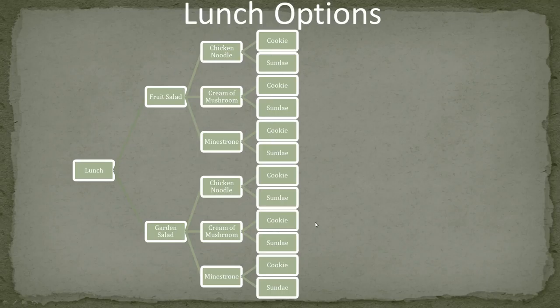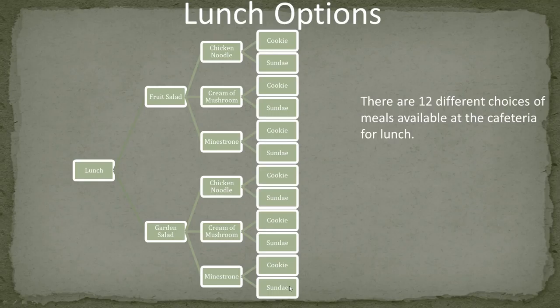Counting all the way down, we get a total of 12 different options of meals at the cafeteria for lunch.